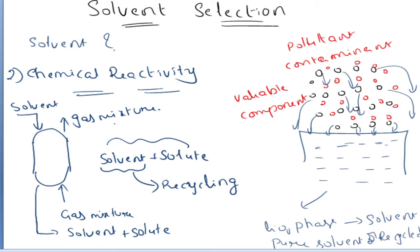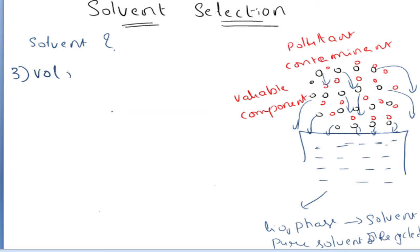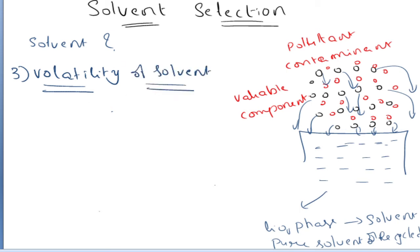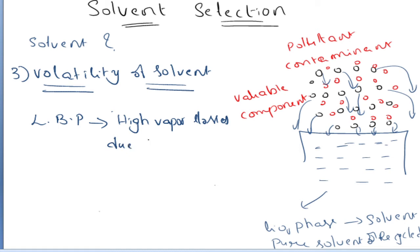The third criteria to be followed is volatility of the solvent. If your solvent is more volatile, that means it has a low boiling point, which can cause high vapor losses due to vaporization during the process — which is a loss to the process. So your solvent should have low volatility so that you can reduce your vaporization losses.